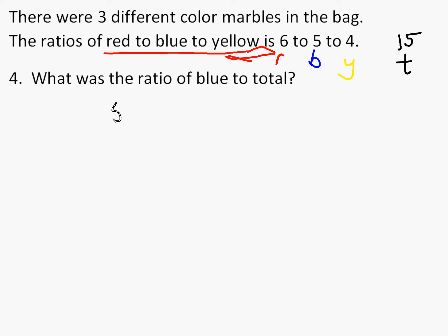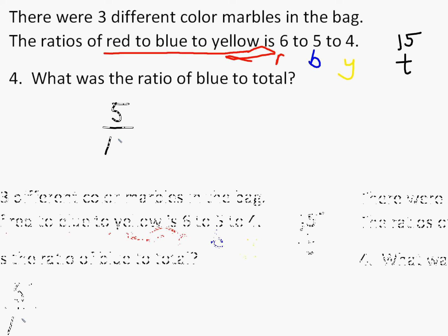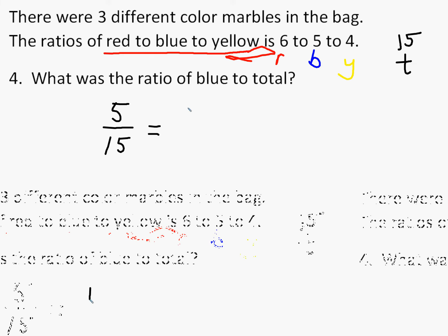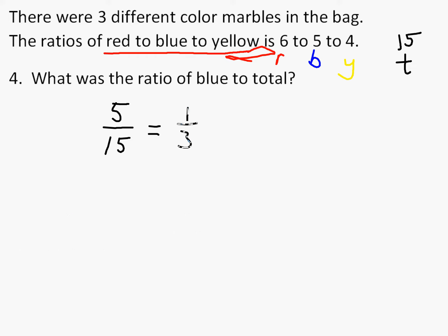So what's the ratio of blue to the total? Well, that would be 5 to 15. And when we're writing ratios, we always want to reduce them if possible. And we notice that we can reduce this. The numerator and denominator both can be divided by 5, and so we get 1 to 3 is our ratio of blue to total.